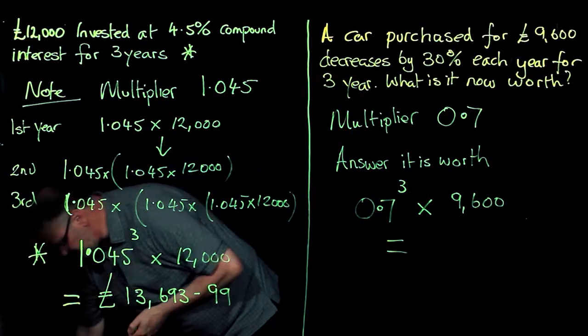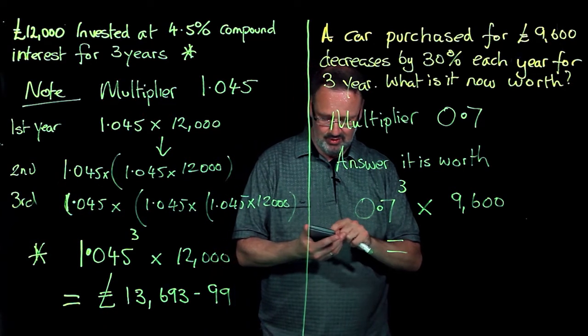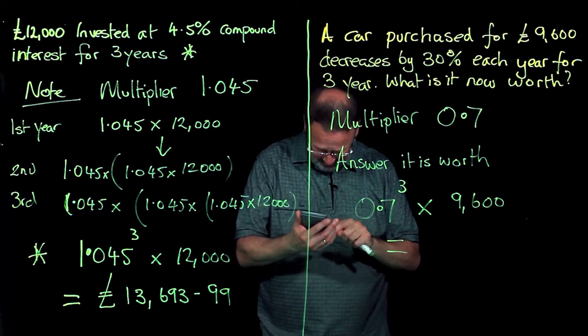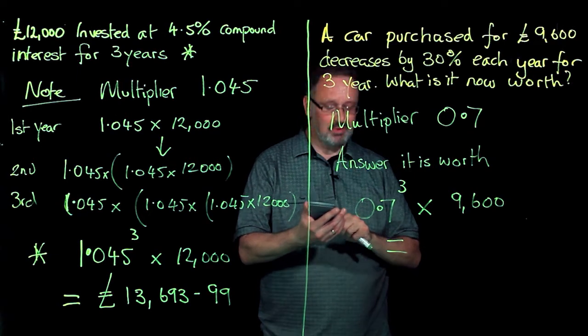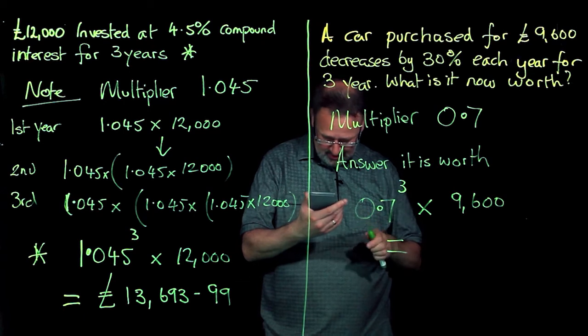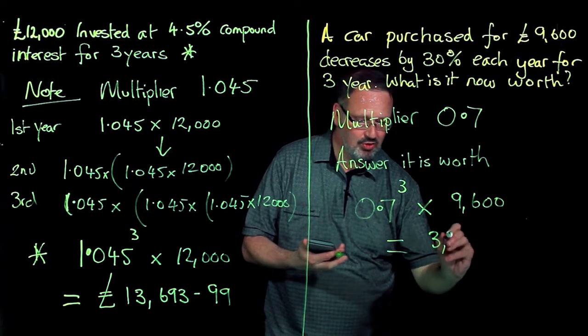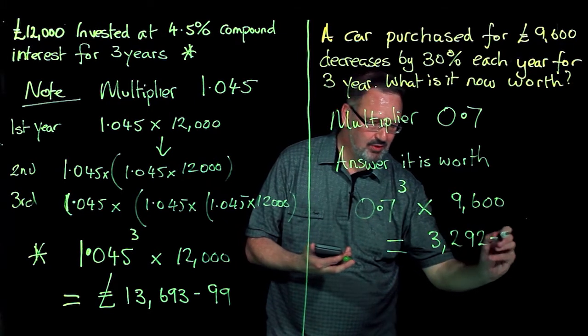Go to my calculator. 0.7 to the power of 3 times 9,600 and equals. And this time I get the answer, 3,292 pounds.